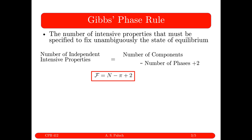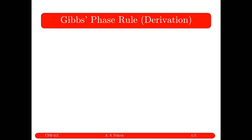The answer is that we have some constraints we can impose. If I have two components in two-phase coexistence, my constraint is that the chemical potential of each species in each phase must be equal. The chemical potential of species 1 in phase 1 and phase 2 must be equal, and the chemical potential of species 2 in phase 1 and phase 2 must be equal. That gives me two constraint equations, which reduces the number of degrees of freedom to 2. Now let's go through the formal derivation.